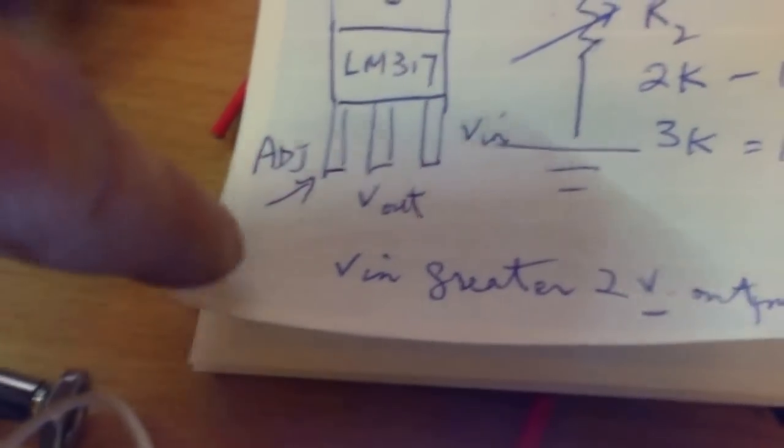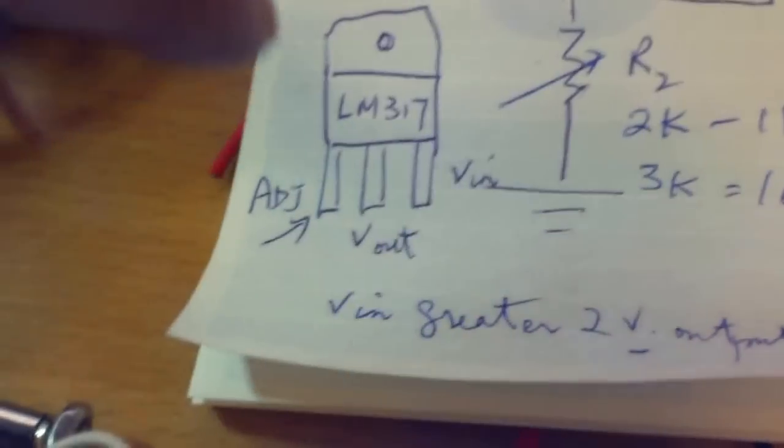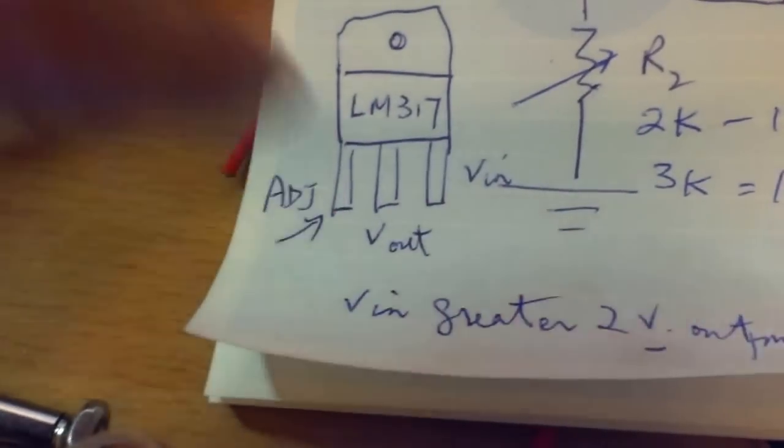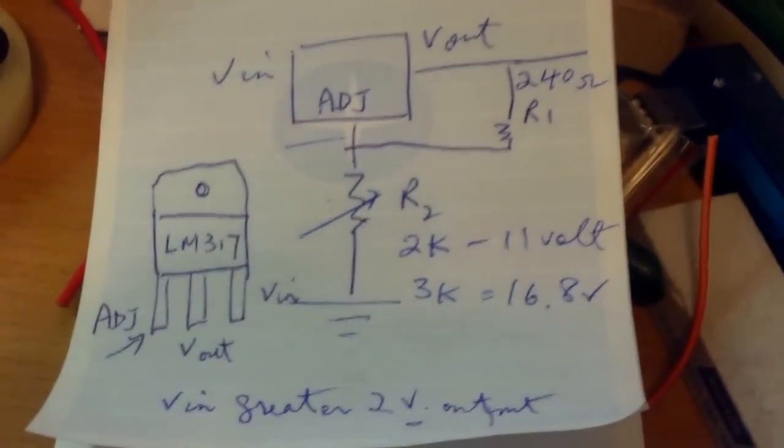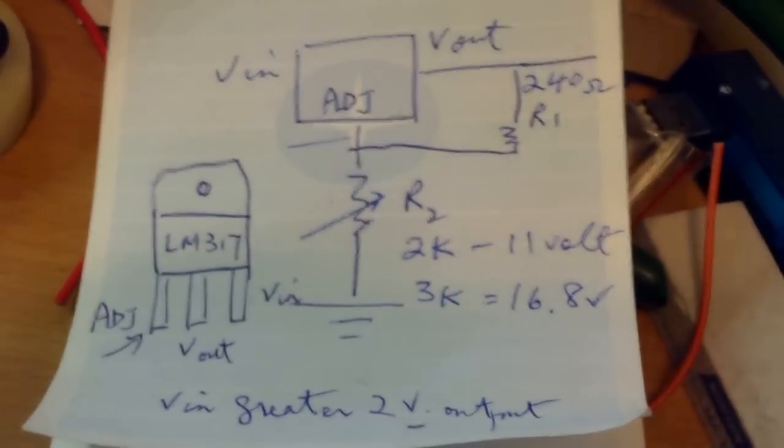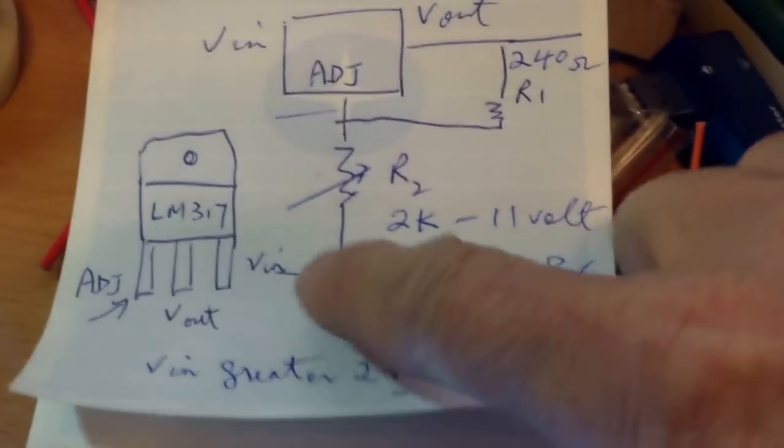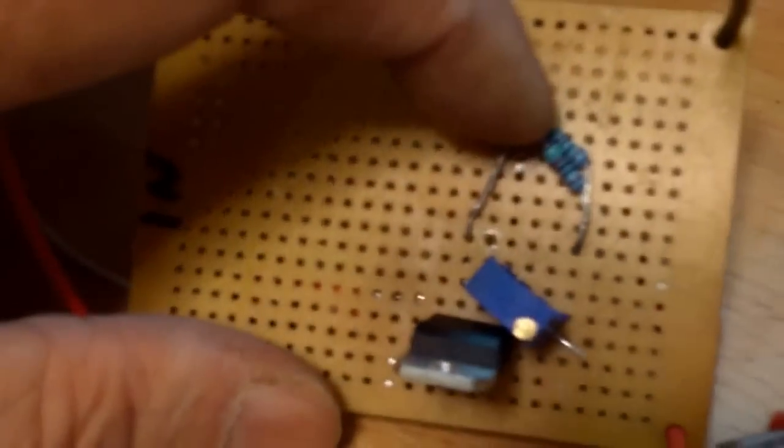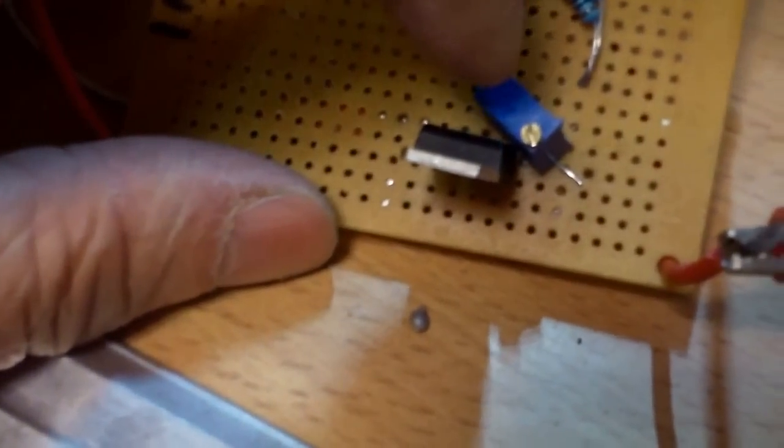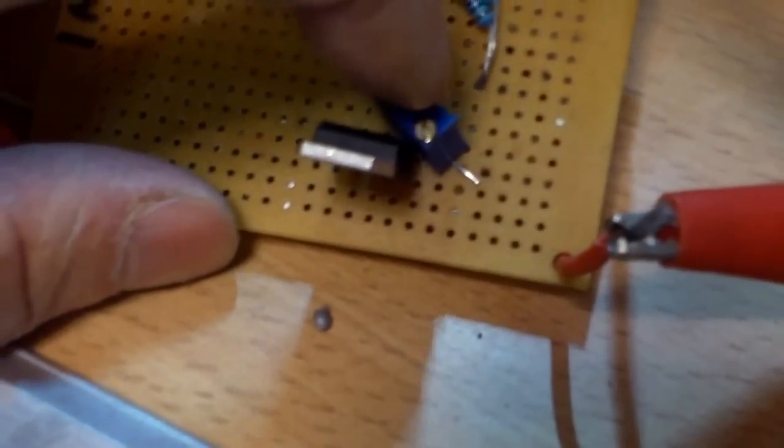If you were to make the voltage regulator, just pay attention to the pin-out. This is the back. Like I said, it's relatively simple. Instead of the variable resistor, you can also use fixed resistors.